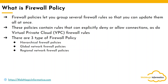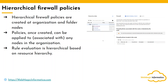Hierarchical firewall policies are created at the organization node or at the folder node. Within this policy you can have rules — for example, you may want to allow port 80 for the entire internet, so you create a rule for that. This policy can be created at the organization node or the folder node, and then you can associate it with the entire organization or a particular folder. All the VPCs within those projects get this rule applied automatically.